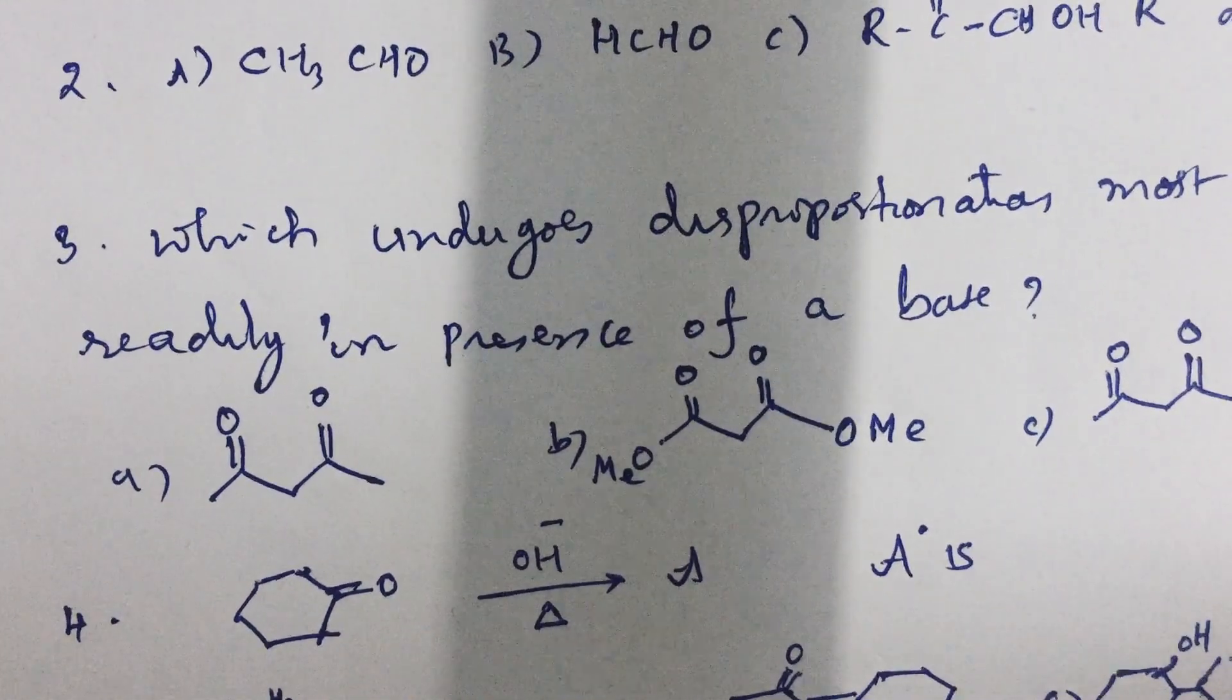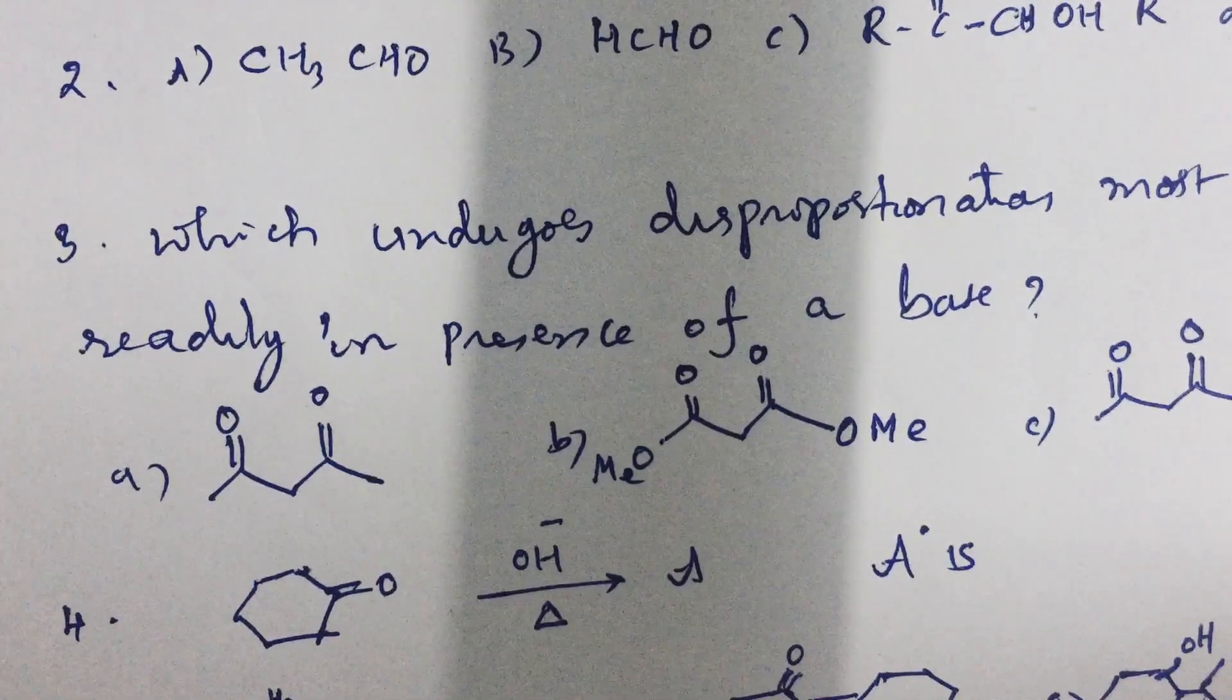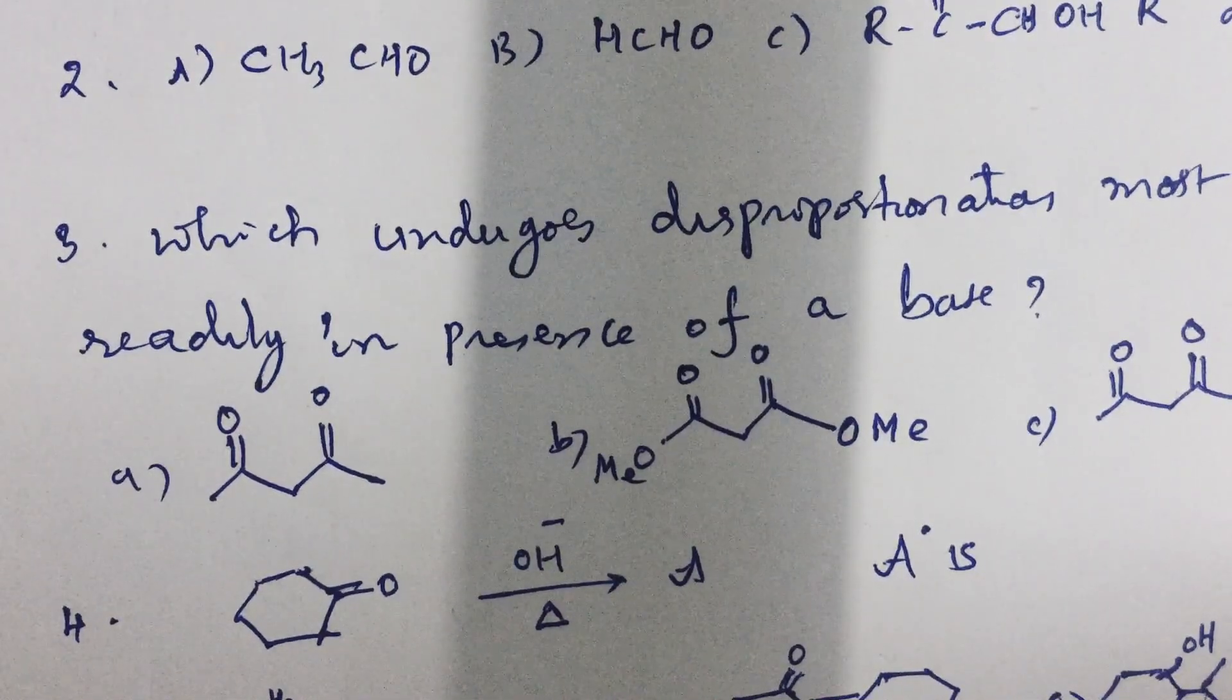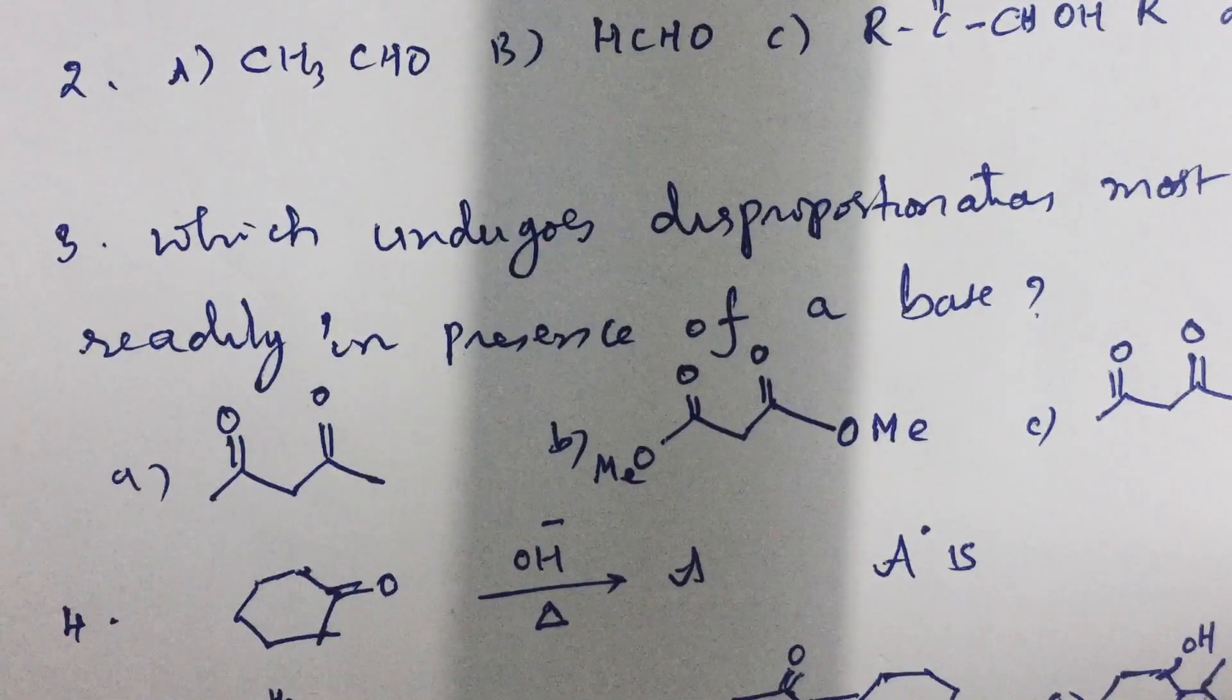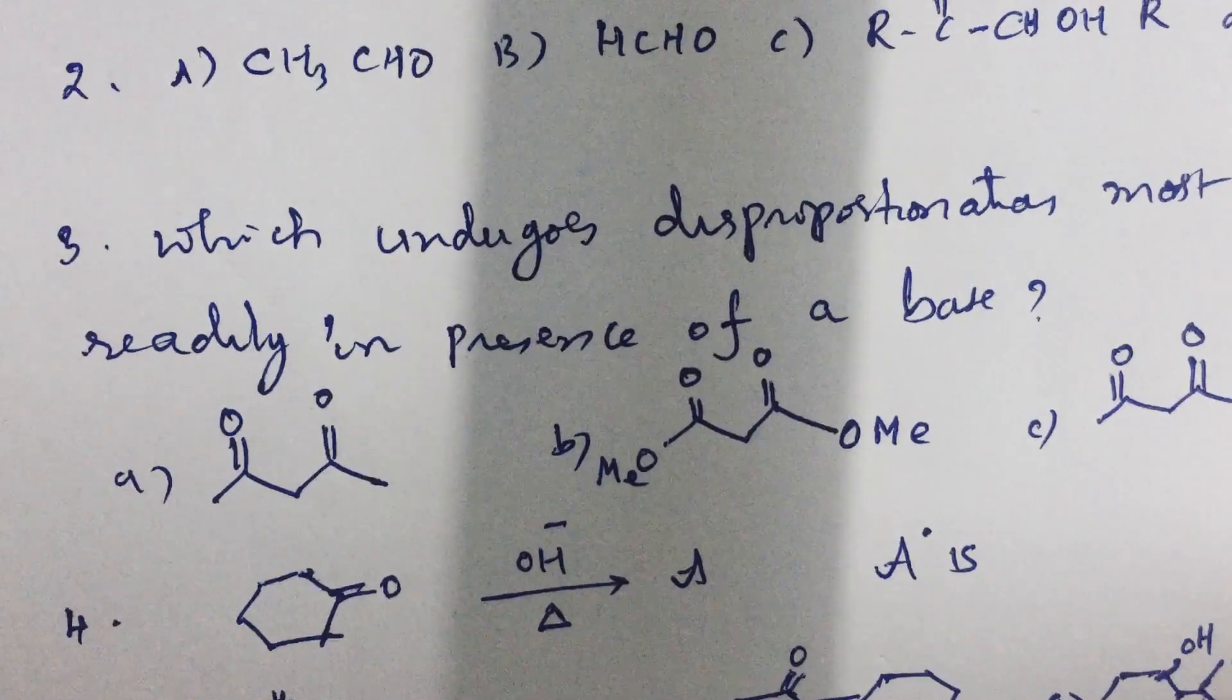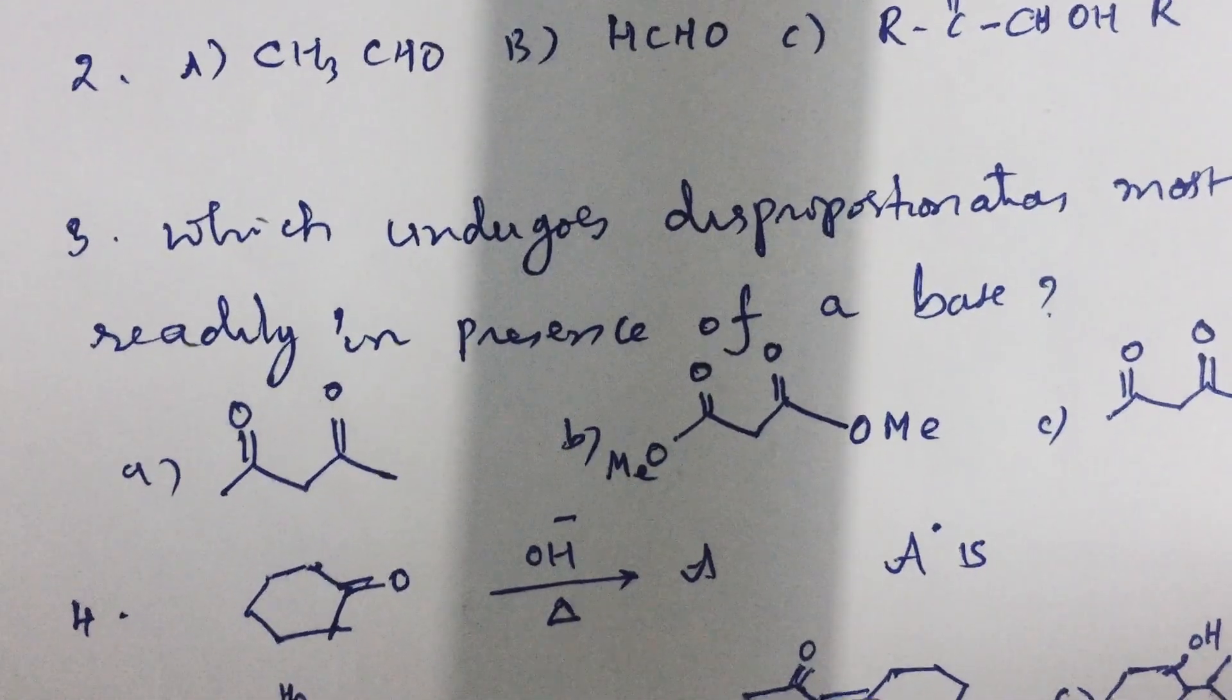Looking at fourth question, what is the product when cyclohexanone undergoes a change in presence of base on heating? Obviously, it is a ketone having alpha hydrogens, so it can undergo aldol condensation. As you know, in aldol condensation, alpha carbon loses H-plus making a carbanion. That carbanion attacks carbonyl carbon of another such molecule. And eventually, that on heating loses water to give alpha-beta unsaturated carbonyl compounds.